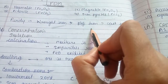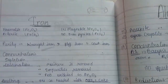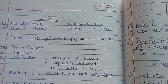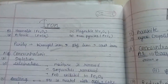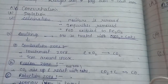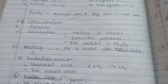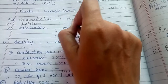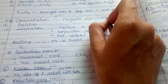For extraction of iron, the same three processes apply: concentration, isolation, and purification. For concentration, magnetic separation is mainly used because iron has magnetic properties.